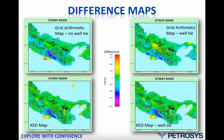These are the difference maps, all using the same colour bar. With the grid arithmetic map and no well tie, zero is green showing little change — actually quite good — but away from well control there are some differences. Well-tying drastically reduces those changes. The kriging with external drift map also has some changes away from well control, and the well-tied KED similarly shows some variation away from well control, but overall it's quite a good match — most of the grid is green.